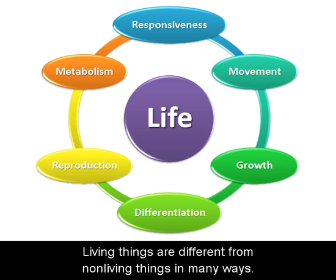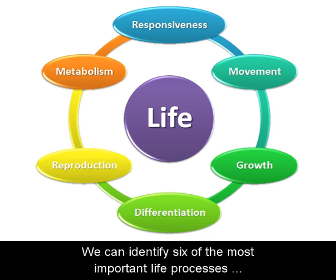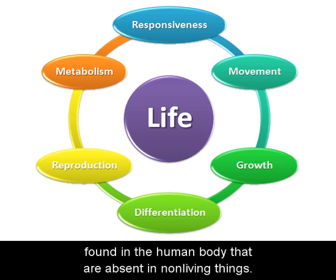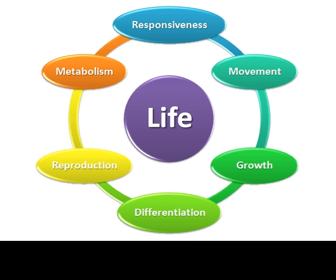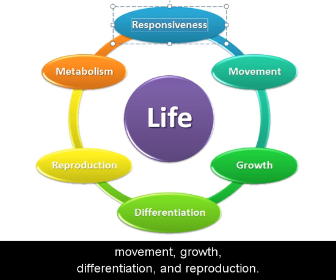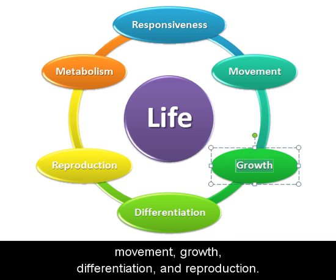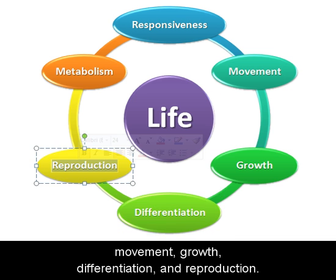Living things are different from non-living things in many ways. We can identify six of the most important life processes found in the human body that are absent in non-living things. These processes are metabolism, responsiveness, movement, growth, differentiation, and reproduction.